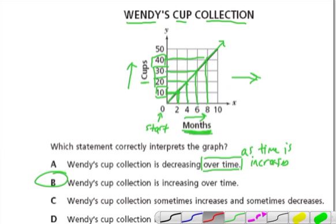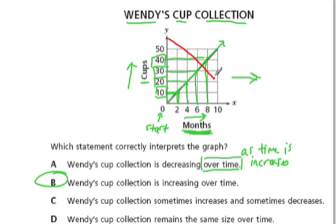But if I did this, something like this, right? And this line kept going. Well, as our months are increasing, what's happening to the cup values now? Well, look, here's eight.